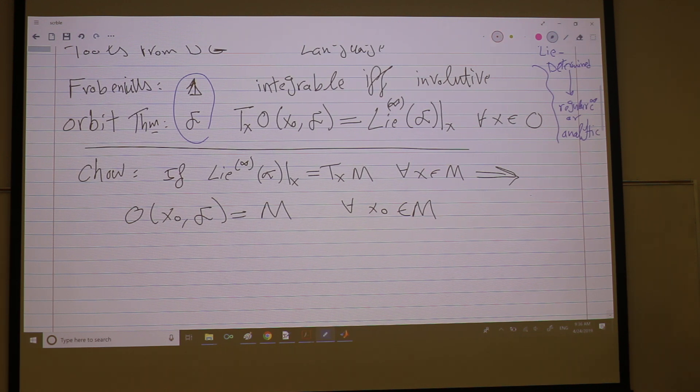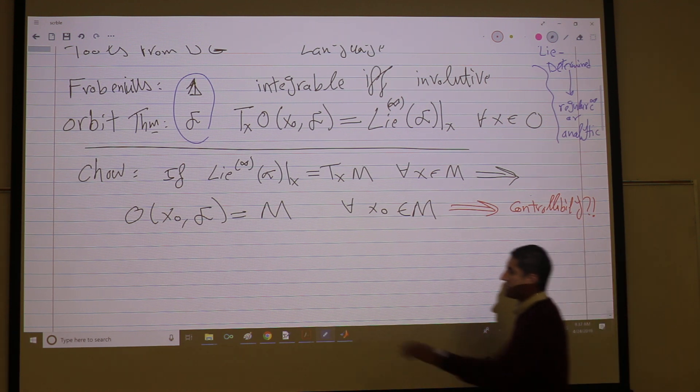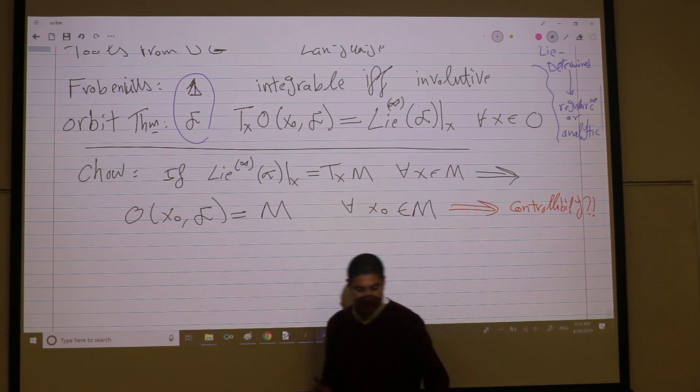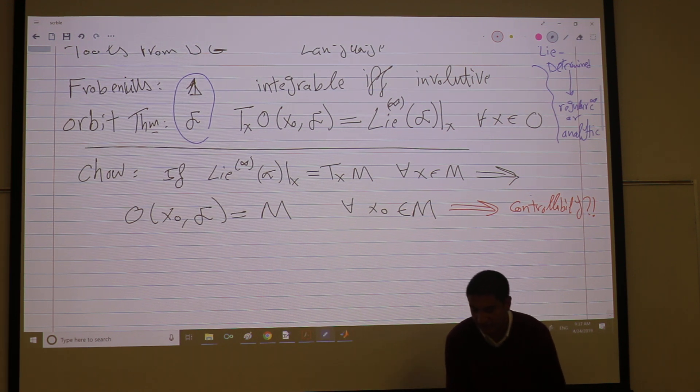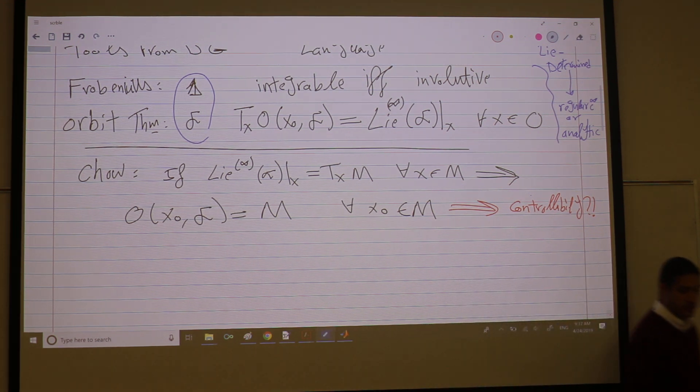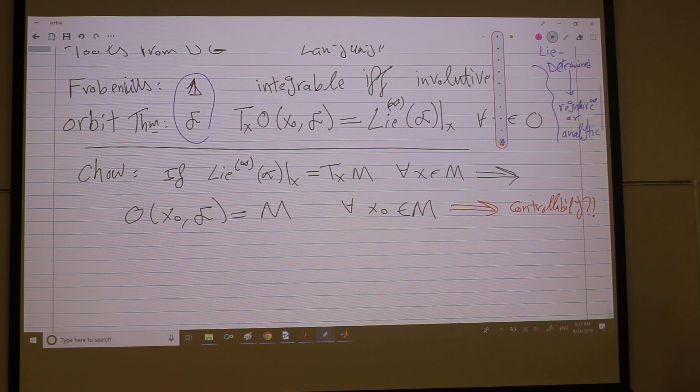Then we said, does this imply controllability? I can reach all points in M from any points in M. We said, well, while the orbits are a bit different from the reachable sets, we have a directionality issue.